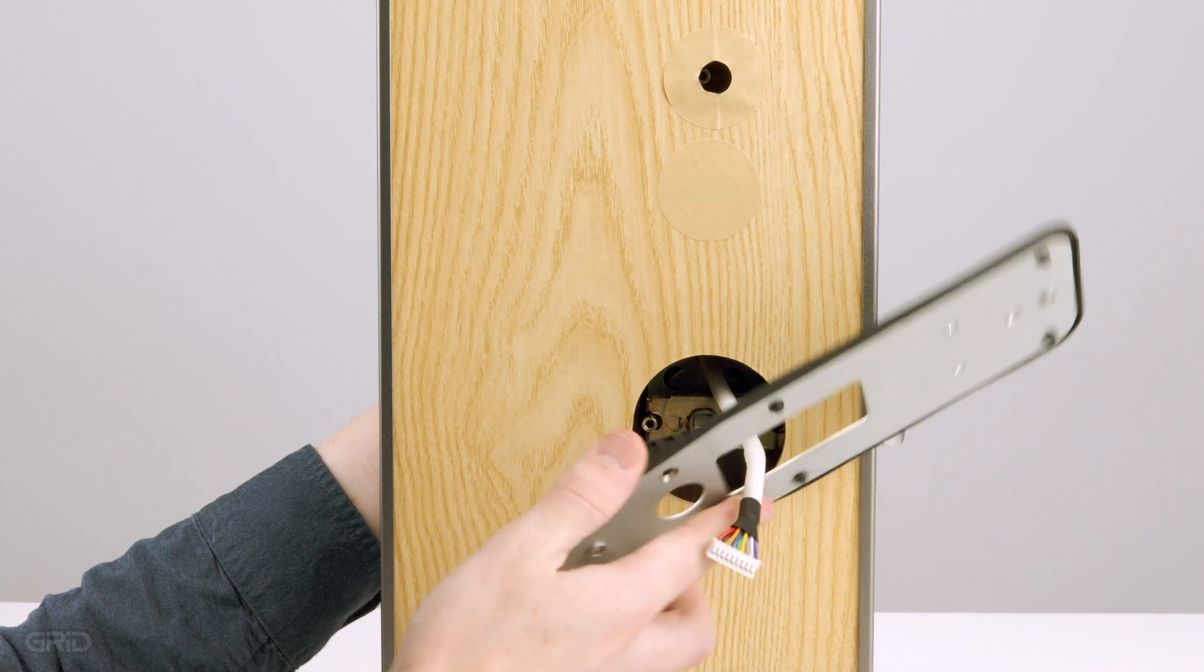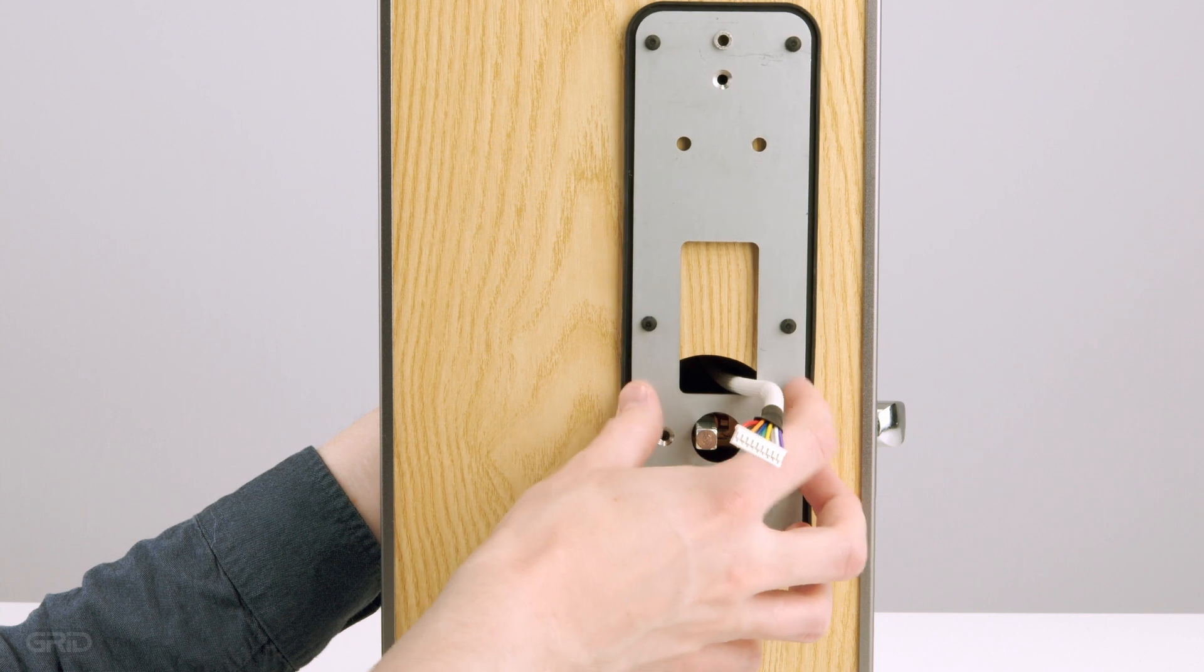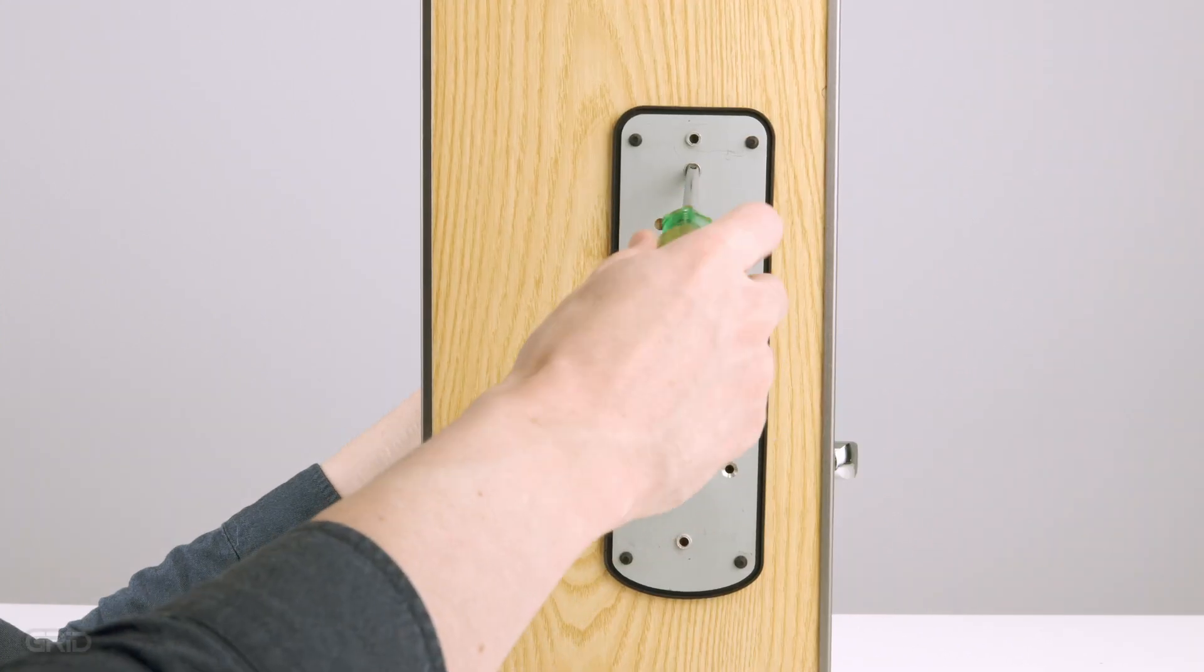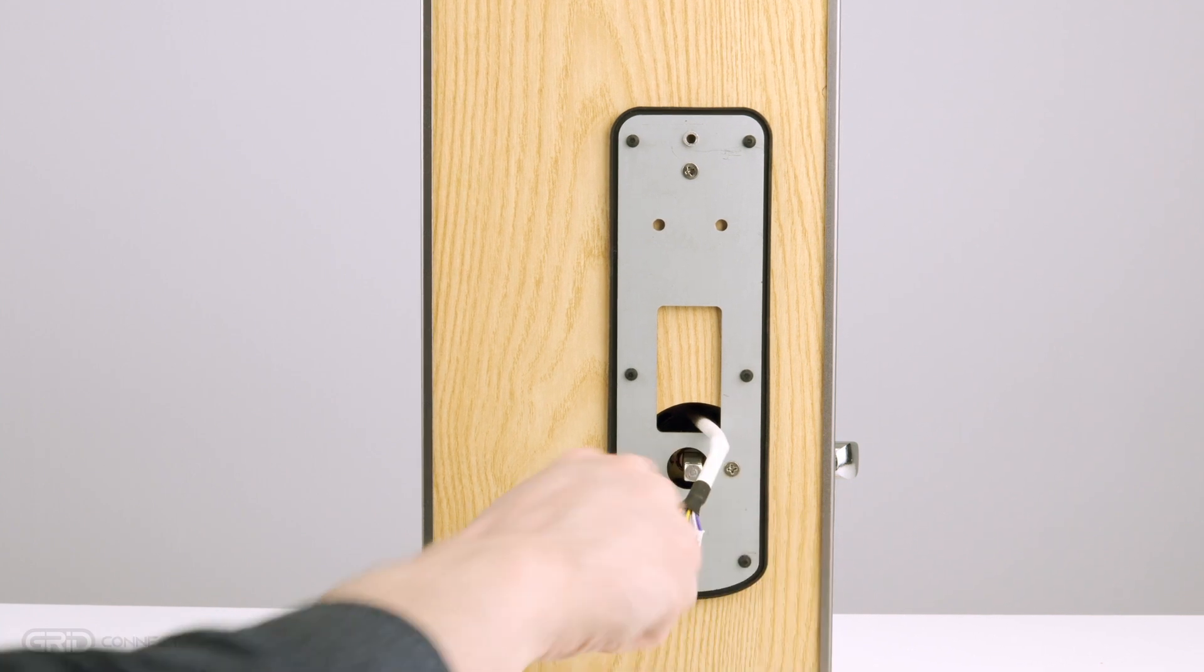Install the mounting plate on the inside of your door ensuring the spindle passes through the round hole and the cable through the rectangular hole. Use the provided A3 or B3 screws to secure the mounting plate to the front panel.